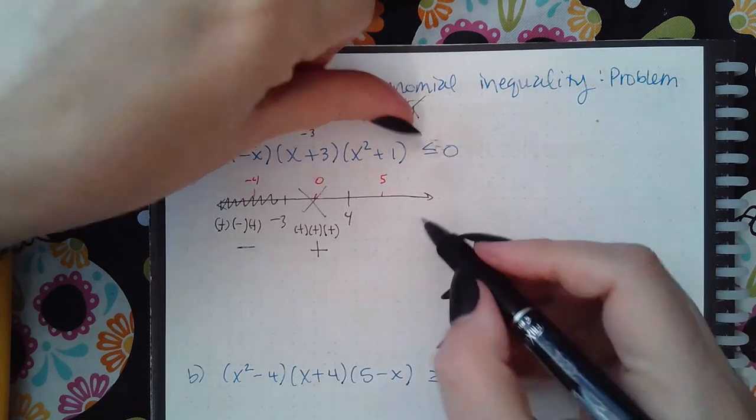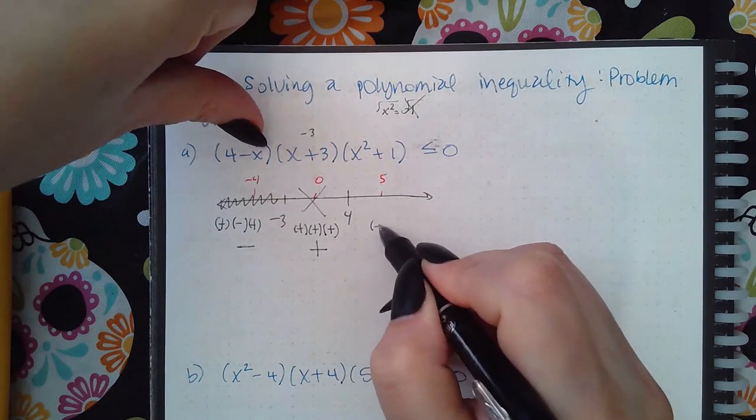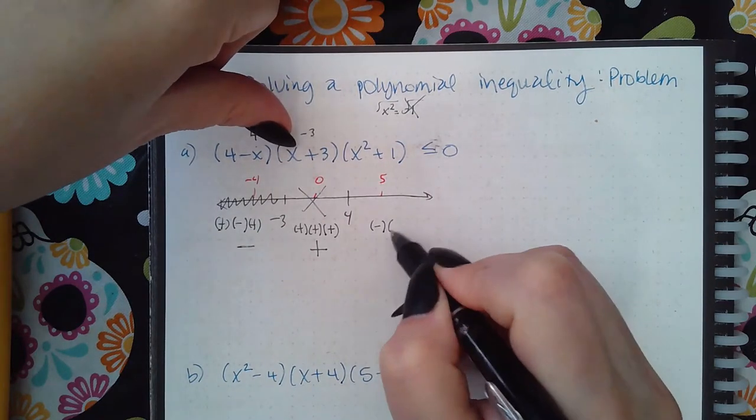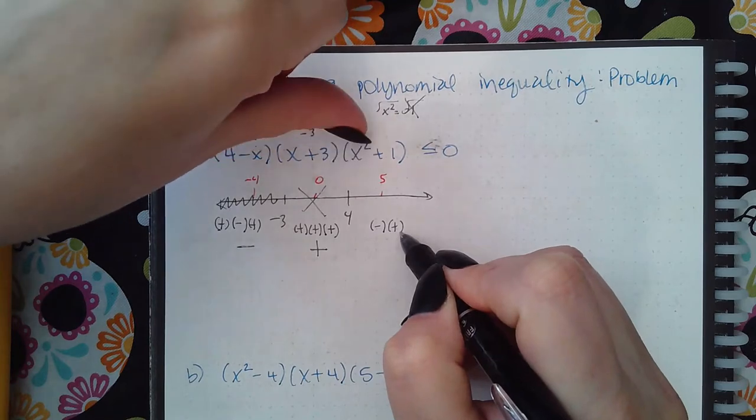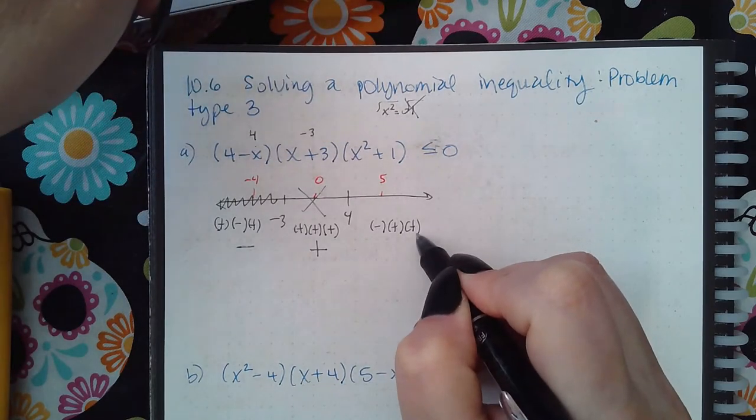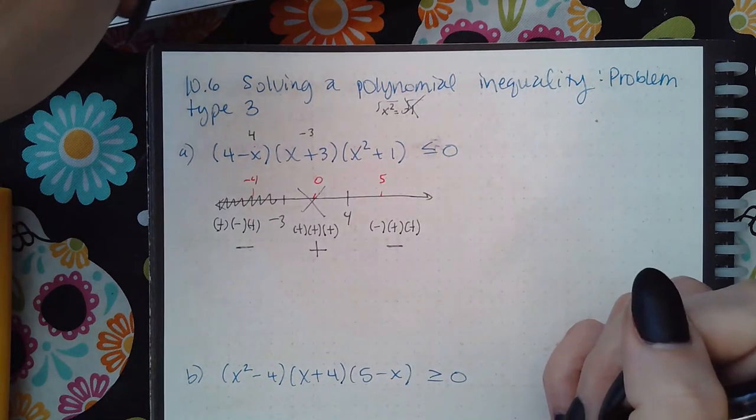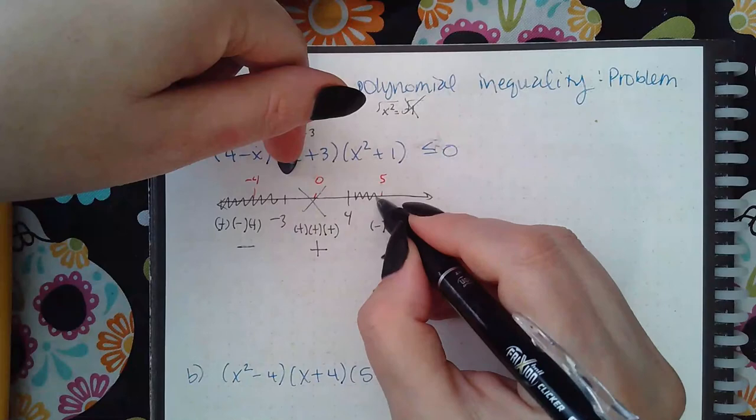Now I'm going to test the region with the 5. So 4 minus 5 is negative 1, 5 plus 3 is a positive, 5 squared is 25 plus 1 which is 26 which is also positive. And when I multiply these signs together I get a negative, so that means this region is less than or equal to 0 as well.